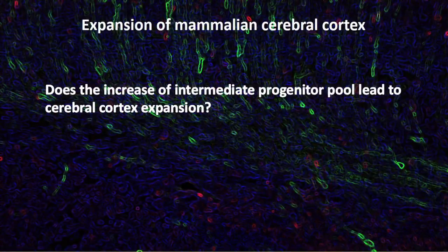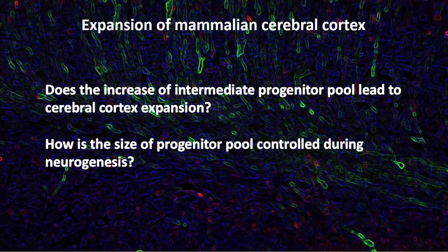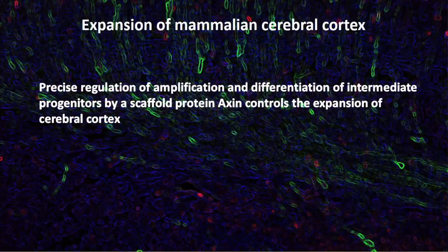The marked increase in the population of intermediate progenitors during cortical evolution led scientists to hypothesize that the increase of the intermediate progenitor pool underlies cerebral cortex expansion. In this study, we asked two key questions: first, does the increase of the intermediate progenitor pool lead to cerebral cortex expansion? Second, how is the size of the progenitor pool controlled during neurogenesis?